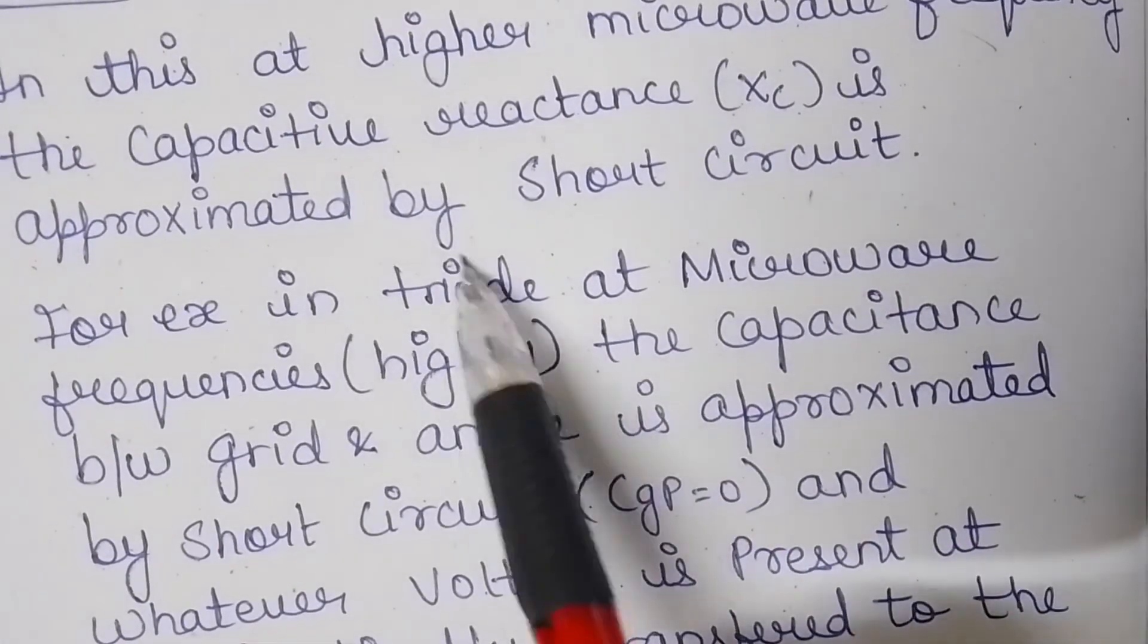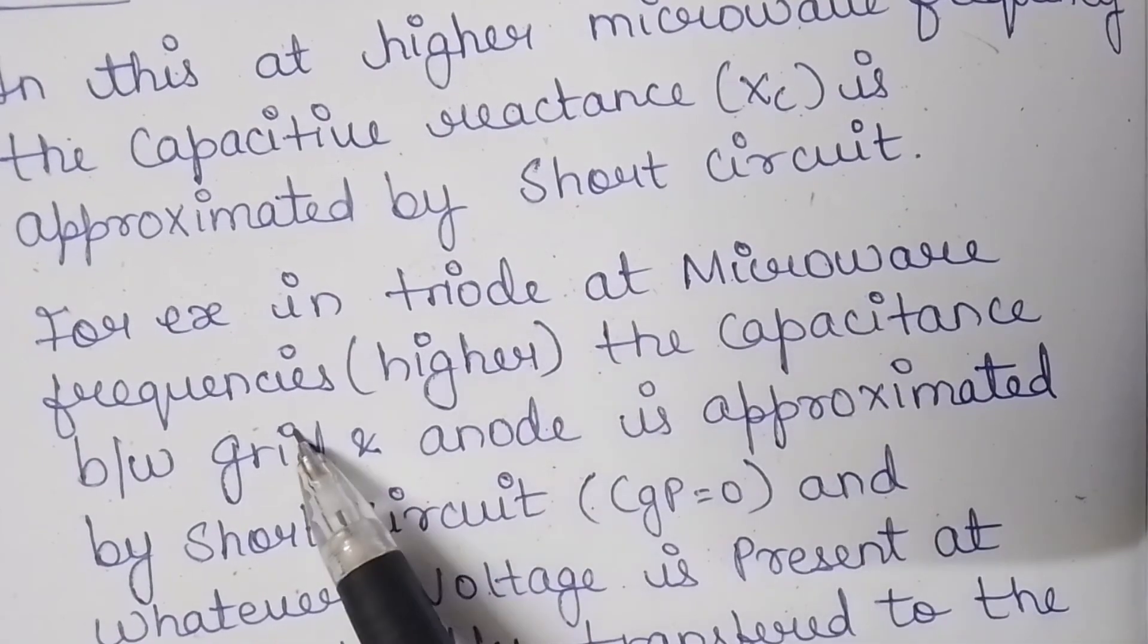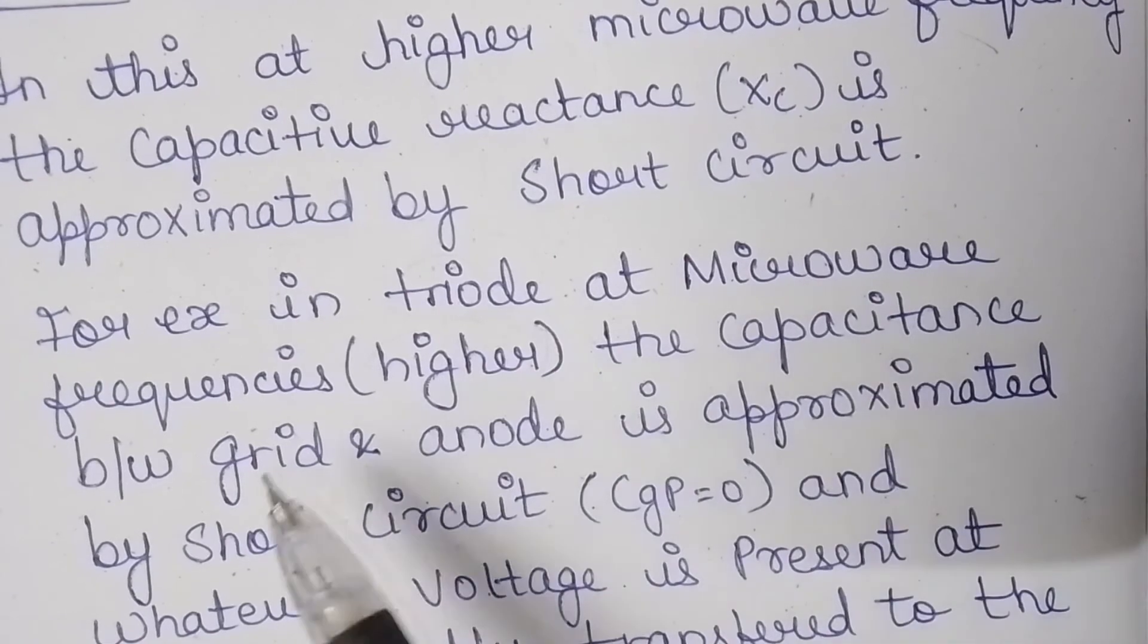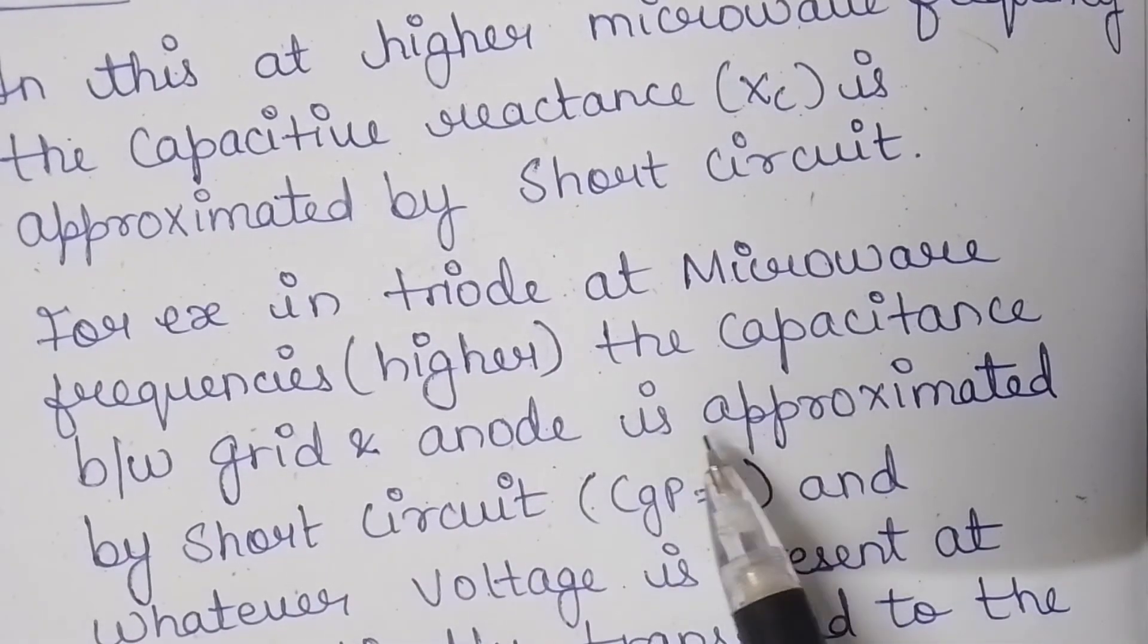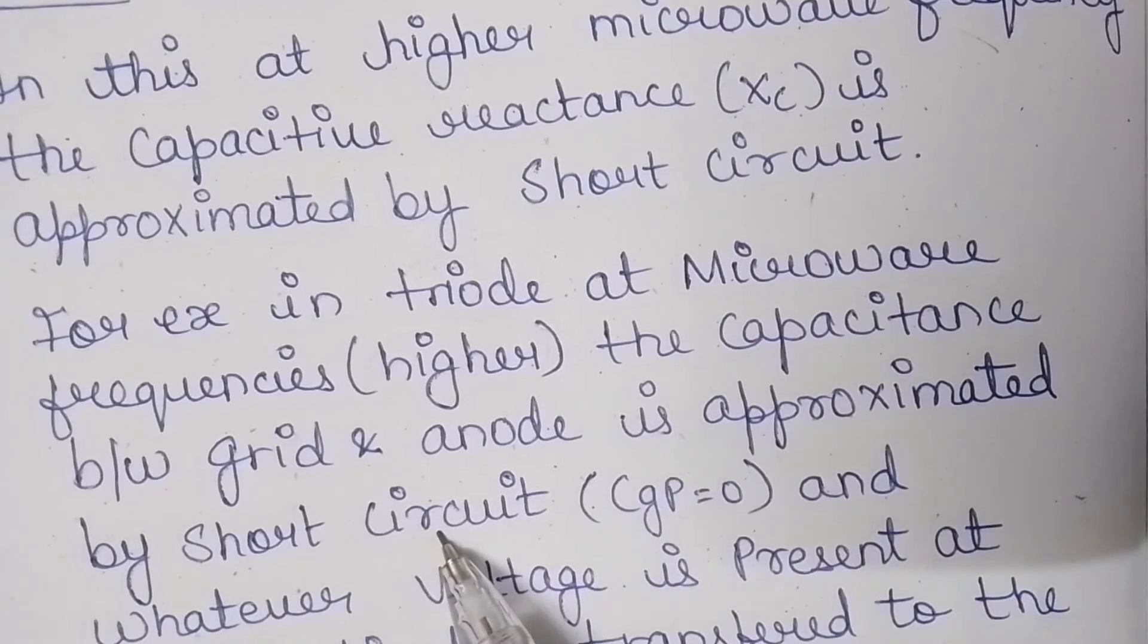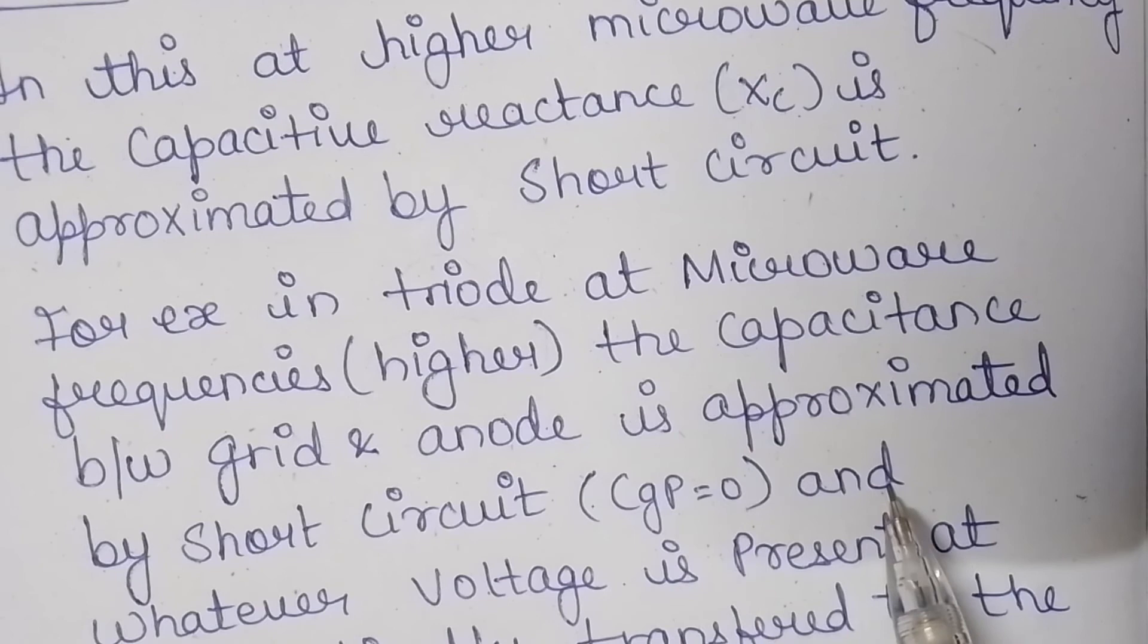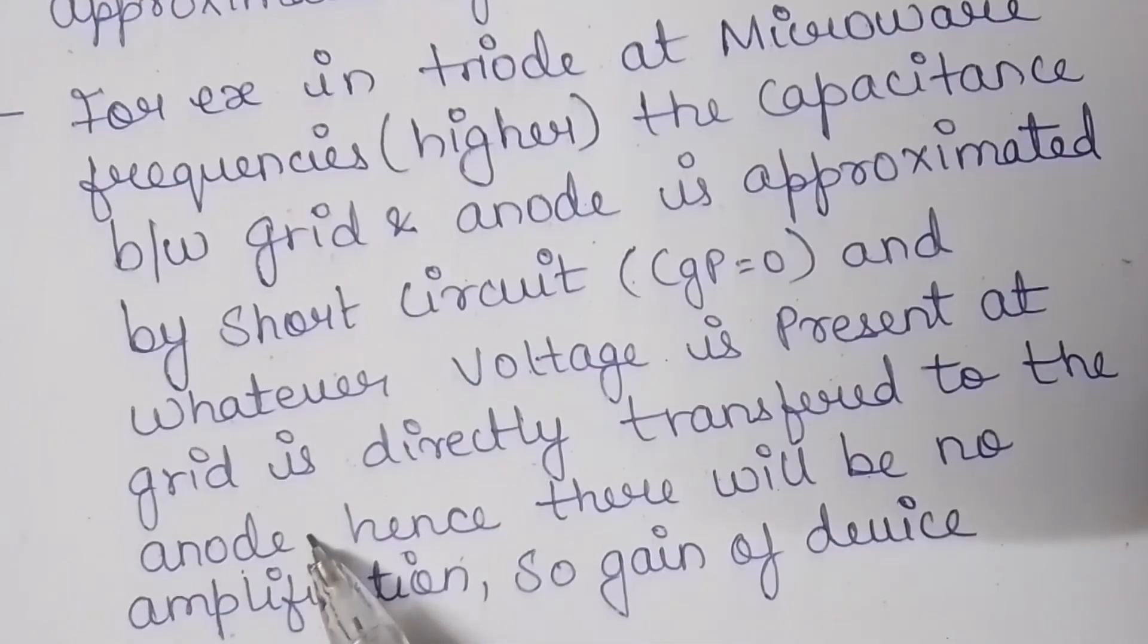Let's take triode which is a device or a conventional tube. At microwave frequencies, that is higher microwave frequencies, the capacitance between the grid and anode, which are the electrodes of the triode, is approximated by short circuit, that is Cgp equals 0. Whatever voltage is present at the grid is directly transferred to the anode, hence there will be no amplification. So gain of the device also decreases.